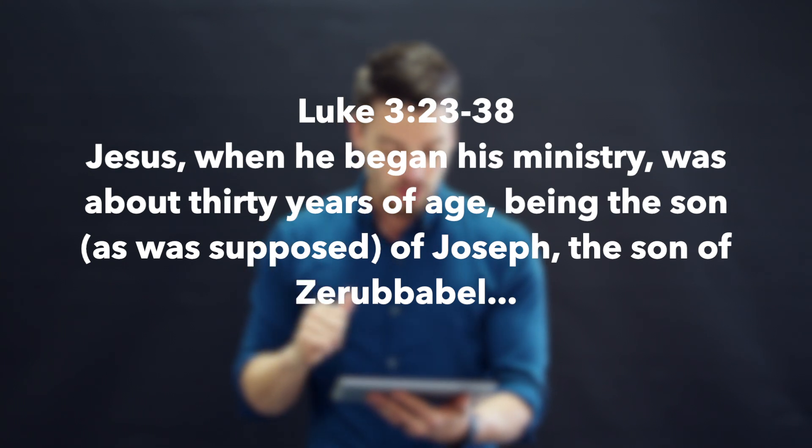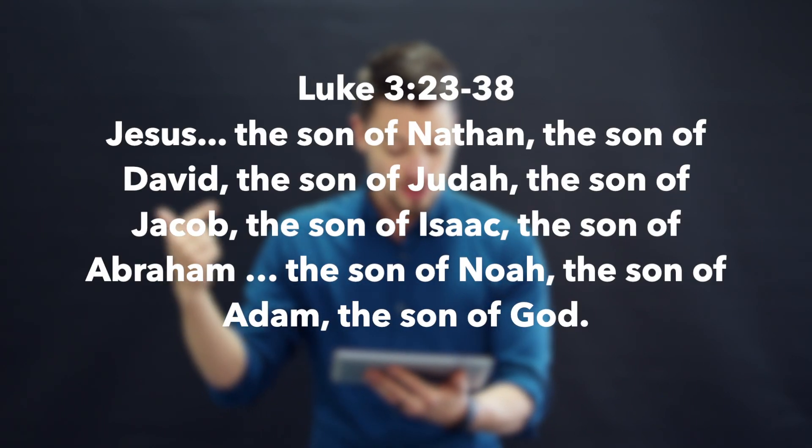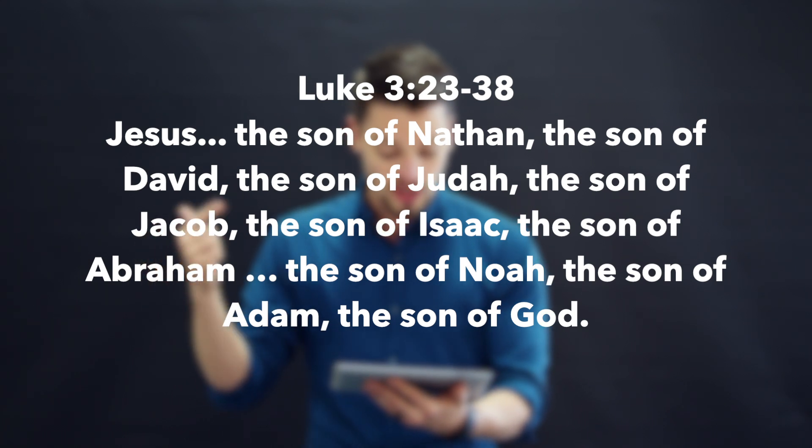Jesus, when he began his ministry, was about 30 years of age, being the son — as was supposed — of Joseph, the son of Zerubbabel. That's the guy that came out of exile. The son of Nathan, the son of David, the son of Judah, the son of Jacob, the son of Isaac, the son of Abraham, the son of Noah, the son of Adam, the son of God. The significance here is that Jesus is getting lined up with these people. Jesus is a son of Zerubbabel — he's going to lead the new Israel out of a spiritual exile. Jesus is the son of David — he's going to be the king that furthers David's line. Jesus is a son of Judah because the scepter was promised to Judah's line. Jesus is a son of Noah because Jesus is going to experience a flood-like decreation on the cross that there may be a recreation of all people through his saving work against sin. Jesus is a new son of Adam — a new humanity. Jesus is the son of God, the full and complete son of God winning humanity back through adoption.